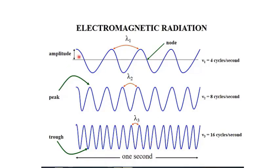As you can see, the first, second, and third waves all start together and end together. This means the speed of light is the same for all of them. There is a difference in wavelength and a difference in frequency, but since wavelength and frequency are inversely proportional to each other, the overall speed remains the same.